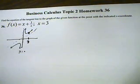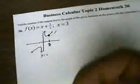Now, at x equals 3, which is right here, we have a point. We want to find the equation of the tangent line right at x equals 3. The tangent line looks like that.